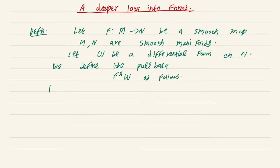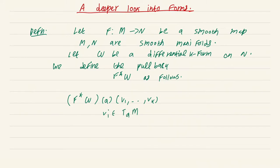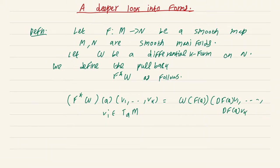Let omega be a differential k-form. We define f star omega as follows. f star omega at a point A acting on the vectors v_1 to v_k, where v_1 to v_k are all elements of T_A M: to define the action of the pullback on these vectors, we look at the action of omega at the point f(A). Remember, omega lives on the manifold N — we are pulling it back to M. It acts on the vectors given by the derivative map of f at A applied to v_1, ..., v_k.